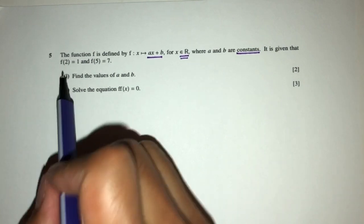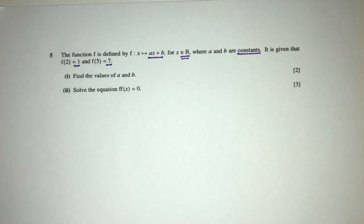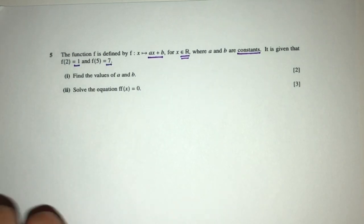It is given that f(2) is 1 and f(5) is 7, so let's find the values of a and b. Pretty easy, use the given values to find that. So first part,